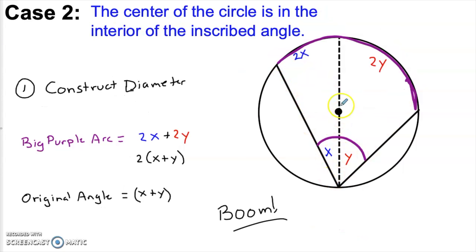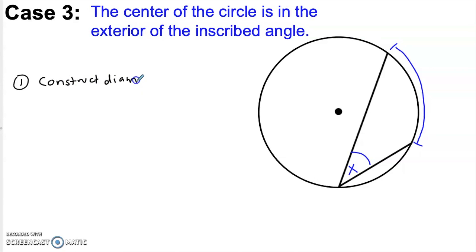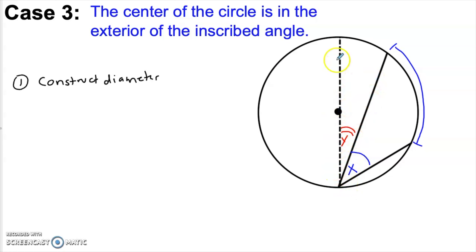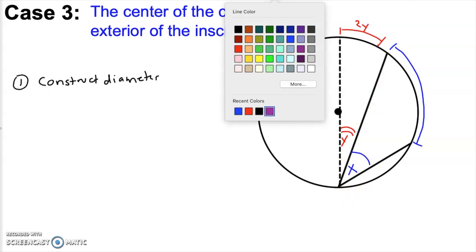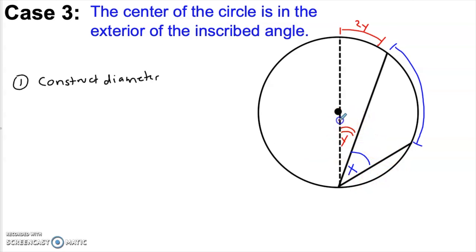Inscribed angles are always one half the intercepted arc. Or are they? Well, we know that if the angle goes through the center of the circle we can prove it — Case 1. We know that if the center is inside the angle we can prove it — Case 2. But there is still one more case we haven't considered. What if the inscribed angle is set up so that the center of the circle is outside of the angle? We're interested in this angle right here — this is the inscribed angle that intercepts this arc. What we'd like to show is that this arc has to be 2x, or double the inscribed angle. The way we're going to do that is by once again adding in a diameter. I've now created some Case 1 angles. This angle right here, let's call it y, is an inscribed angle that's a Case 1 angle — it goes right through the center of the circle, which means we know that its intercepted arc has to be 2y.